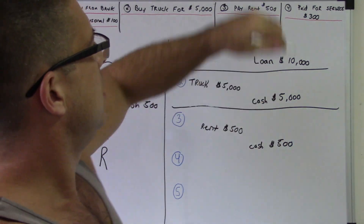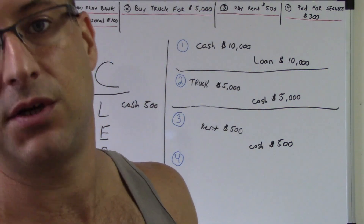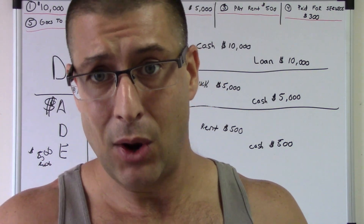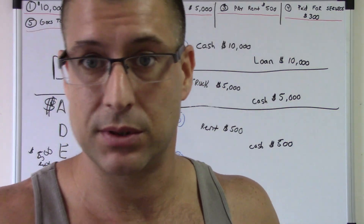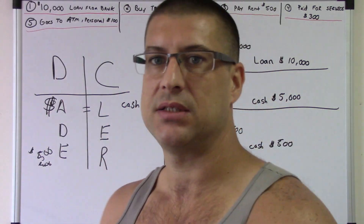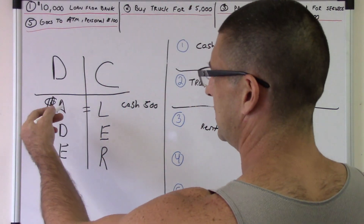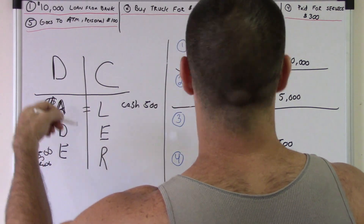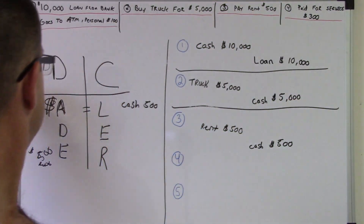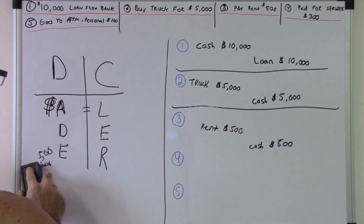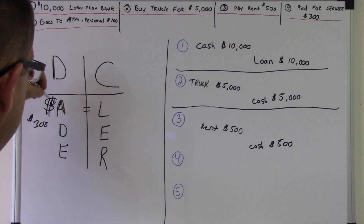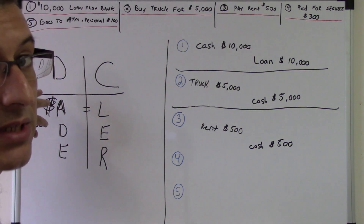Number four: you get paid for a service. You get paid three hundred dollars for some work you did. You're getting money in. Cash coming in — positive, asset, left-hand side, debit. So we've got three hundred dollars coming in for a service. Positive amount, so that's debit three hundred dollars.